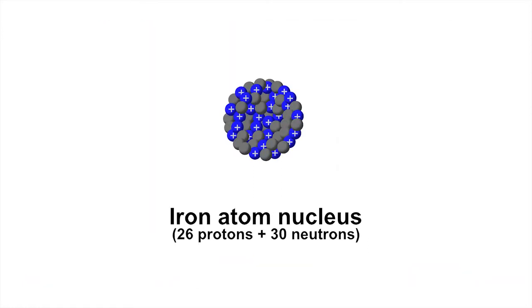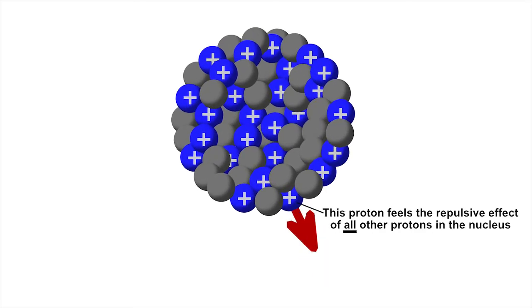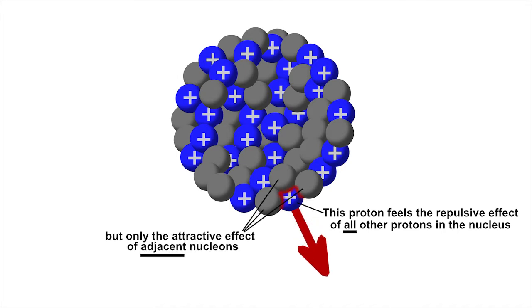However, for large nuclei containing many protons, you need more neutrons than there are protons to maintain stability. This is because the repulsive forces between protons can make themselves felt throughout the nucleus, whereas the sticky nuclear glue only operates at very small distances.